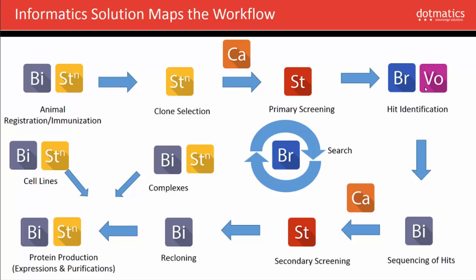We'll go through these in more detail and you'll see them live in the demo. The final icon is CA, which is Cascade — a work-requesting system. Since this workflow is conducted across multiple teams, you need the informatics system to capture requests from one team to perform a service, such as a screening or sequencing service. And critically, at any stage, all of this data needs to be brought together so that any scientist can quickly access it to execute their part of the workflow or make a decision based on it.